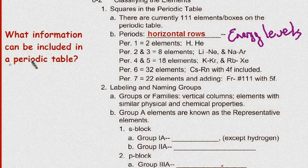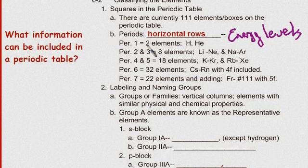So the first period has two elements, the 1s2 elements. Periods 2 and 3 each have 8. So that's 2s2, 2p6, and 3s2, 3p6, and so on. Then there's the 18 elements and 32 elements. Period 7 would have another 32, and so on.